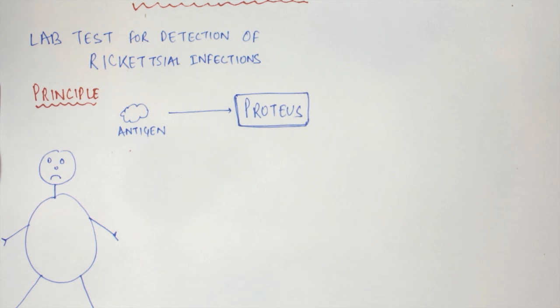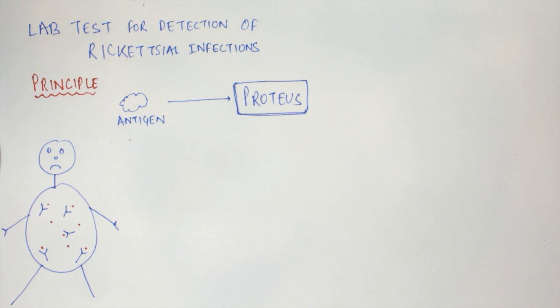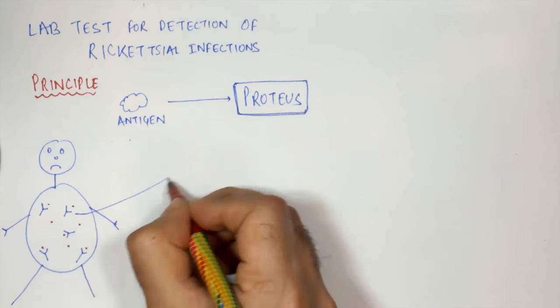His immune system will produce many antibodies against those antigens. Now since the rickettsial antigens resemble the Proteus antigens, these antibodies will cross-react with the antigens present on the surface of Proteus.